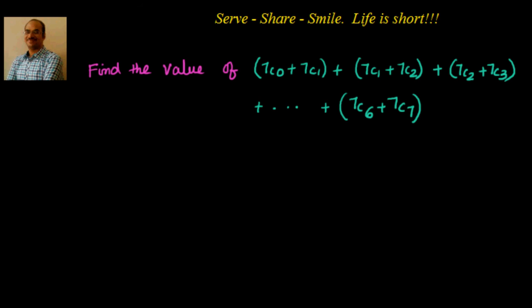Hello friends, welcome back. Let's look at this interesting example related to binomial expansion and permutation and combinations. We have to find the value of 7C0 plus 7C1 plus 7C2 plus 7C3, like that up to 7C6 plus 7C7. Remember, this can be 7 or 9 or 11 — we have to find a generic formula applicable for all such problems.